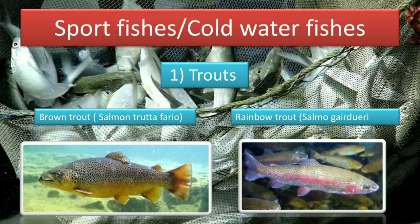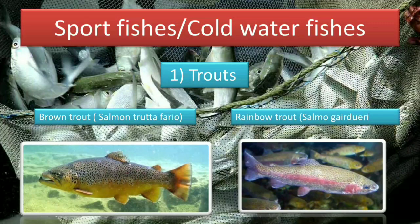Next are sport fishes or cold water fishes. In trout, first is brown trout — Salmo trutta fario. From the photo you can see this species is brown in color, hence called brown trout. Second is rainbow trout — Oncorhynchus mykiss. Its color is somewhat like a rainbow. These two cold water species are cultured in the northern parts of India where temperatures go very low in winter.